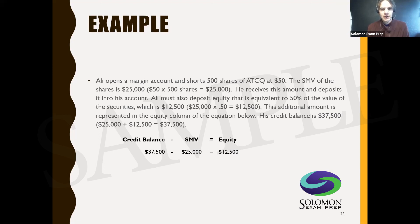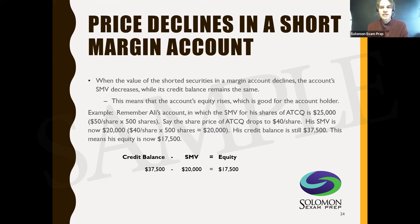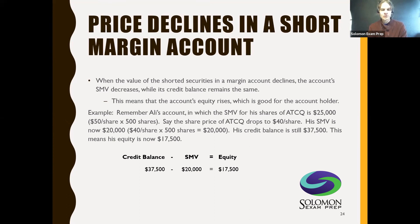When the value of shorted securities goes down, that's good for the short investor — they sold high and want to buy back at a lower price. The SMV decreases while the credit balance stays the same, so equity goes up. For example, if ATCQ drops to $40 a share, Ali's SMV is now $20,000, his credit balance remains $37,500, and his equity rises to $17,500. So in a short margin account, when SMV drops, equity goes up.